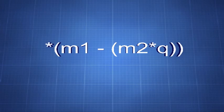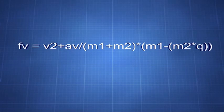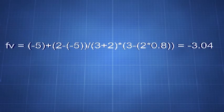q is a regulator of the elasticity if you will. And our equation becomes fv equals v2 plus av divided by m1 plus m2 multiplied by m1 minus m2 times q. Or for instance, setting q as 0.8 or at 80%, we have minus 5 plus 2 minus minus 5 divided by 3 plus 2 multiplied by 3 minus 2 times 0.8 equals minus 3.04.